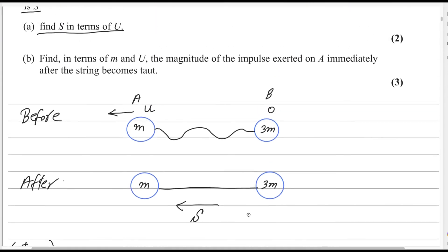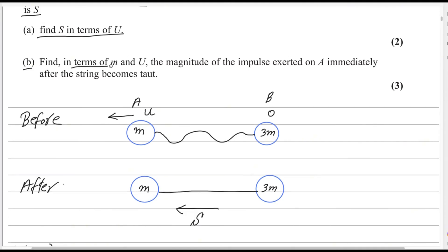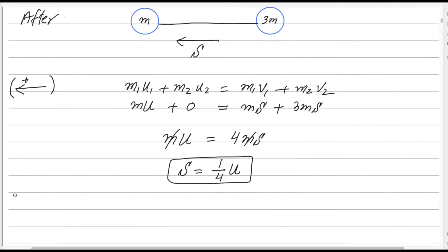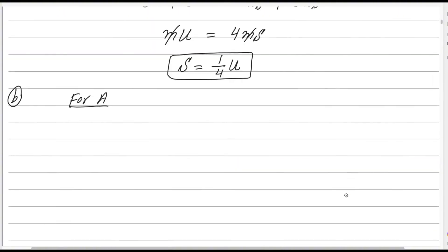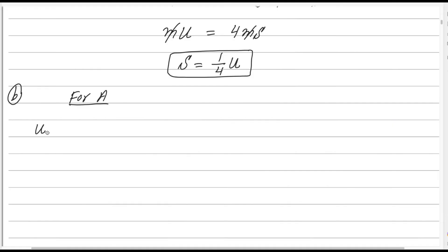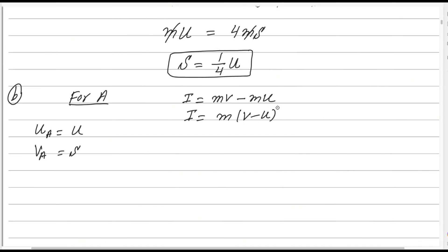Part 1 is done — S = U/4 is the common speed after the string becomes taut. Now for part 2: find, in terms of M and U, the magnitude of the impulse exerted on A immediately after the string becomes taut. For particle A, the initial speed is U and the final speed is S. The impulse formula is change in momentum: impulse = M(V − U), that is final momentum minus initial momentum.